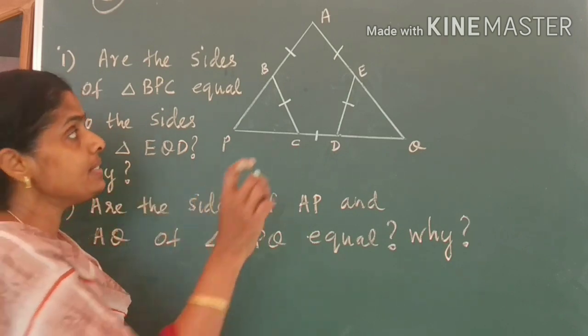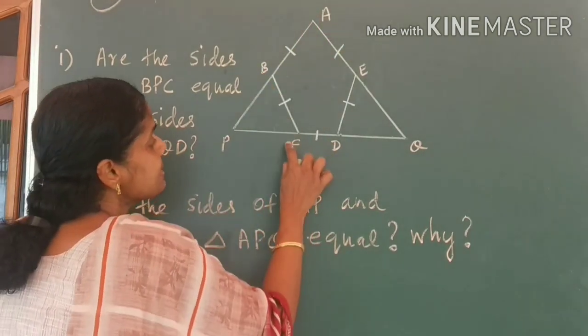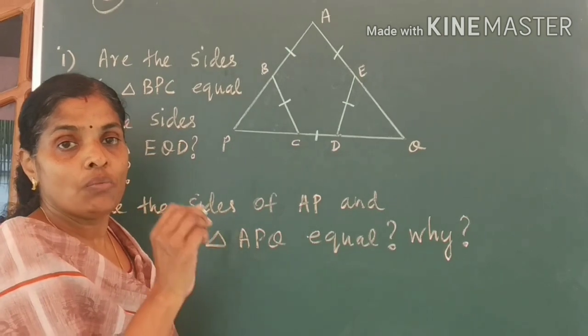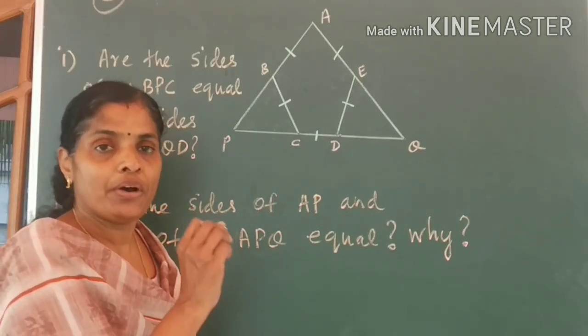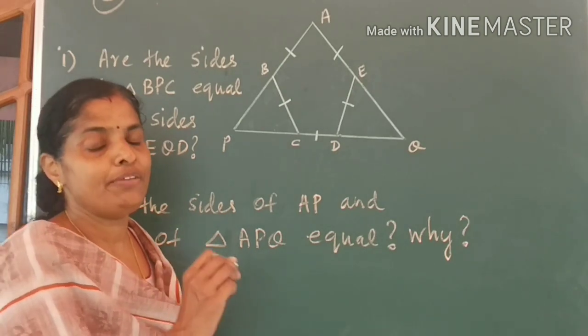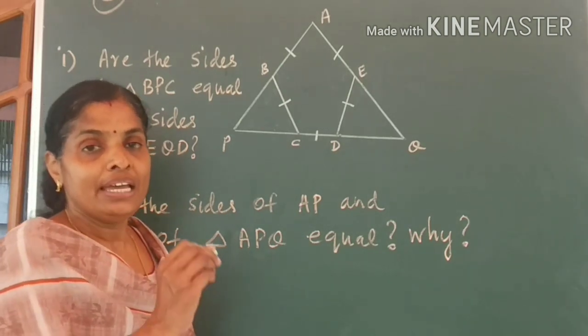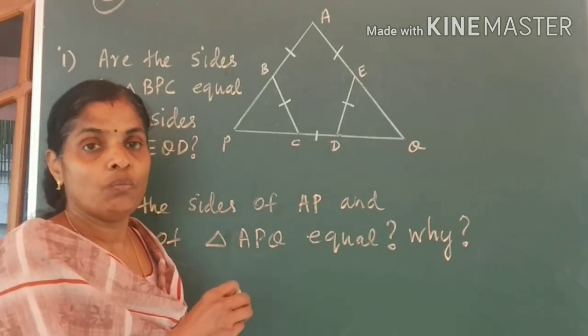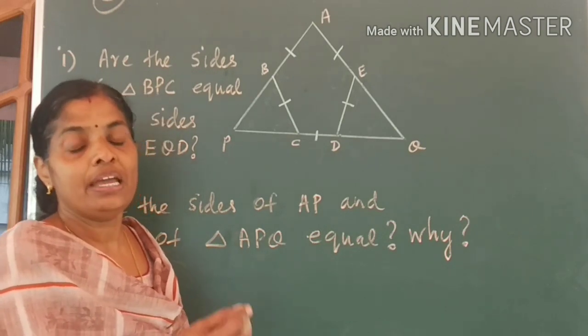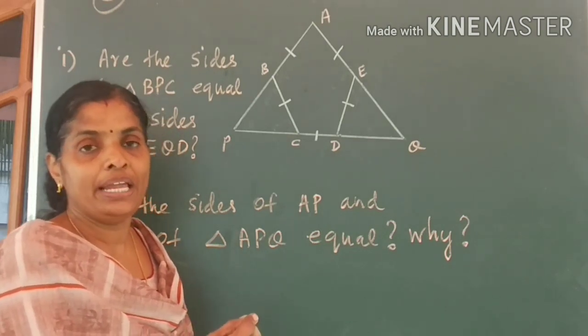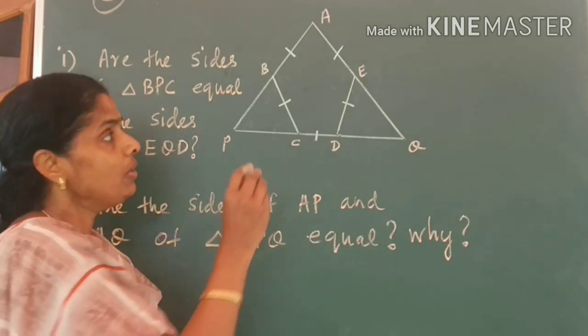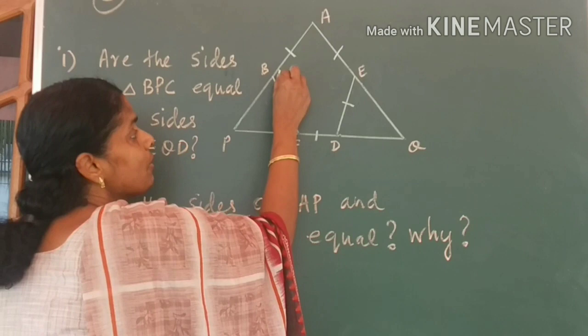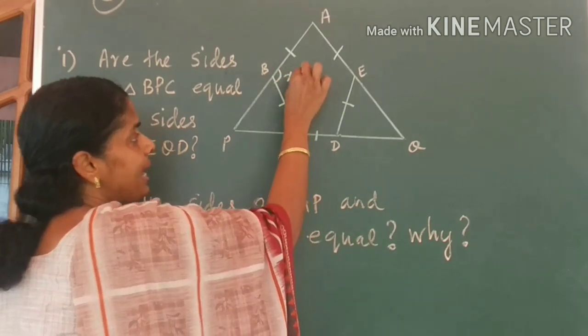Now, since ABCDE is a pentagon with all sides equal, all angles will be also equal. This is a point for you to remember. In a polygon, whatever be the polygon, if all sides are equal, then all angles will be also equal. So, you can name each of the angles to be equal to X.